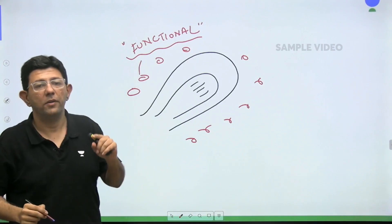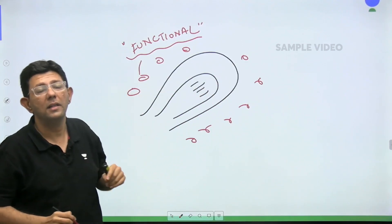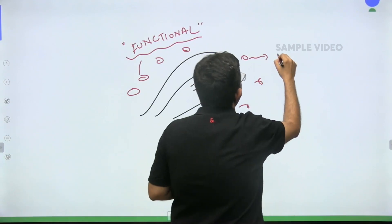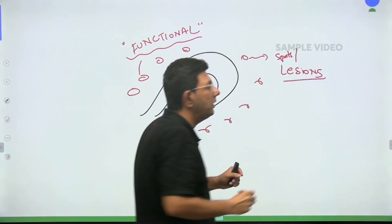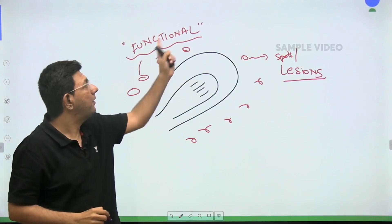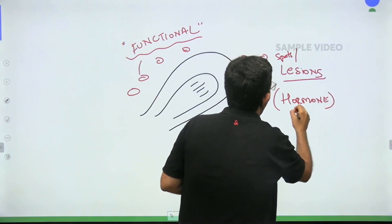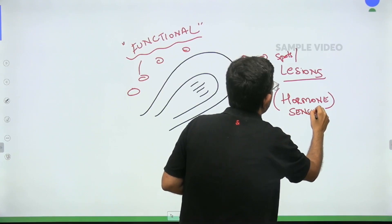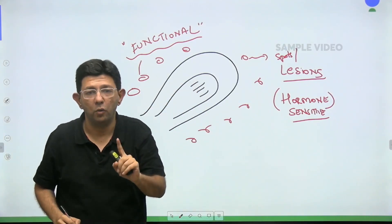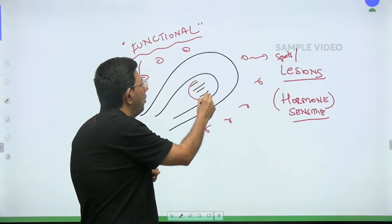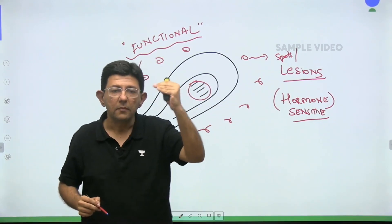These endometriotic spots — also called endometriotic lesions — are functional, meaning they are hormone sensitive. Hormone sensitive means they will behave in the same manner as the endometrium inside the uterus. So endometriosis is the presence of functional endometrium at places outside the uterus — that is, ectopic endometrial tissue.